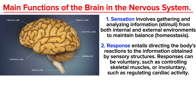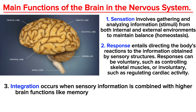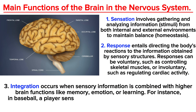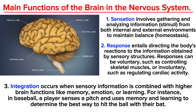The third and last function is integration. Integration occurs when sensory information is combined with higher brain functions like memory, emotion, or learning. For instance, in baseball, a player senses a pitch and uses memory and learning to determine the best way to hit the ball with their bat. So those are the three main functions of the brain: sensation, response, and integration.